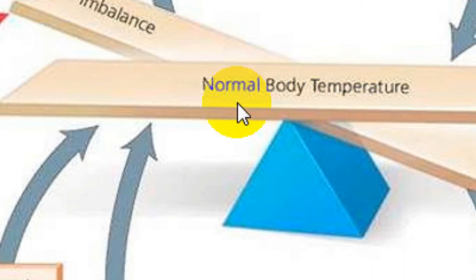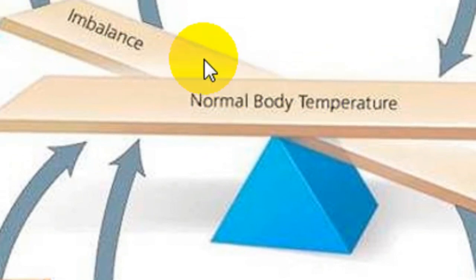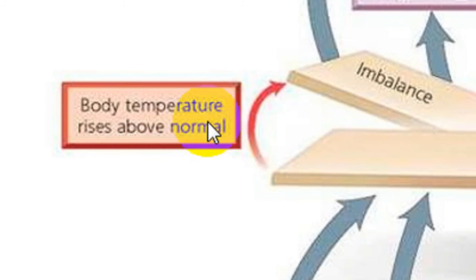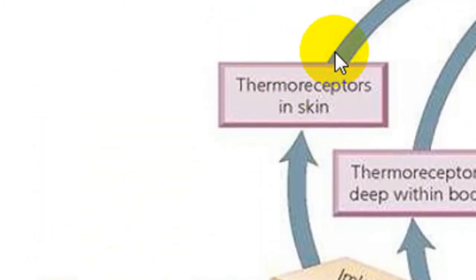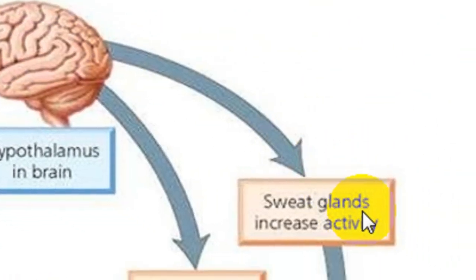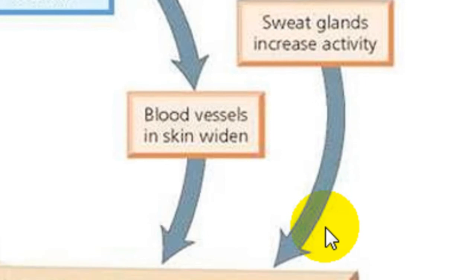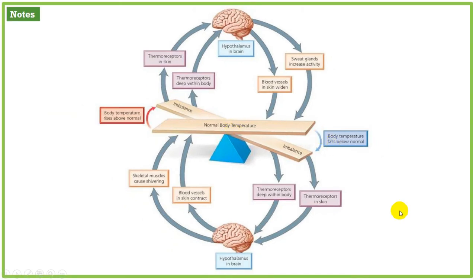When body temperature rises above normal, the thermoreceptors in the skin detect it, send the message to the brain, and the brain sends a message to the effectors. The effectors — sweat glands — secrete sweat, so sweating occurs, and as a result the body temperature returns to normal. So this diagram summarizes in short the homeostasis mechanism. There are many more examples of homeostasis.